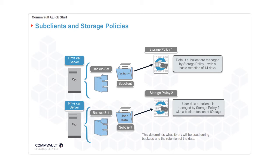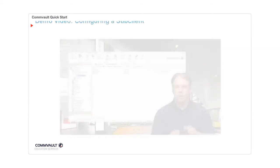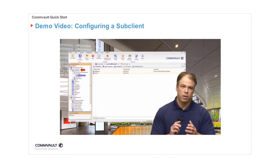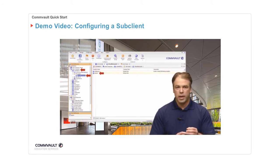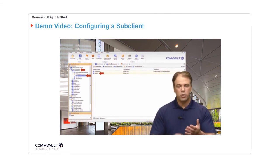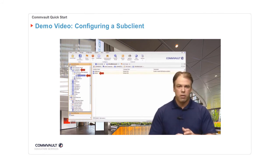This next demonstration shows you how to configure a sub-client and assign it to a storage policy. Now let's review the client tree structure. We will expand client computers, expand the CommServe client we're using as an example here. Expand the file system agent and click on the default backup set. On the right-hand side, we will see the detailed information of what's in the backup set — these are the sub-clients. It's important to note that when you first install agent software on a machine, as long as you have your storage policies and your schedule policies pre-configured and you select them during the installation process, there is nothing you need to do for the sub-clients — they're automatically configured.